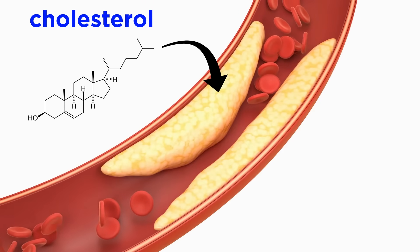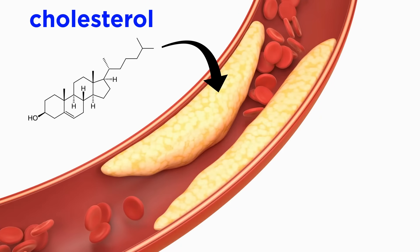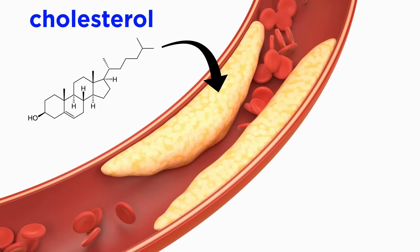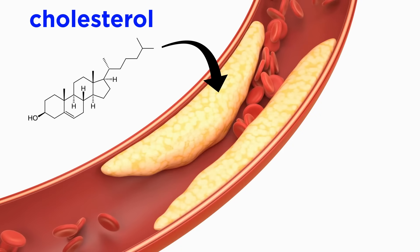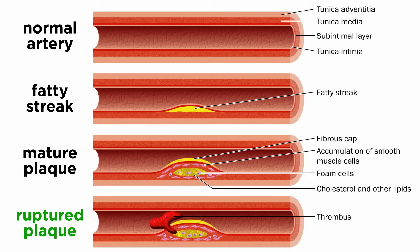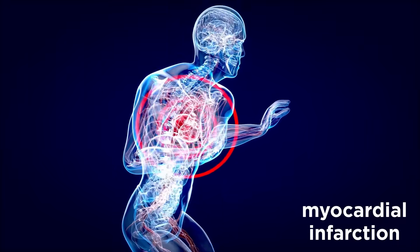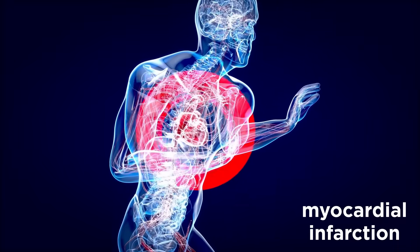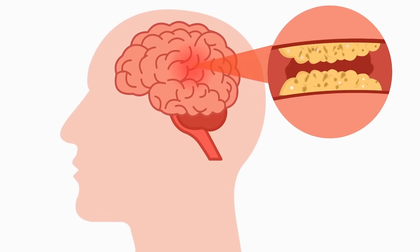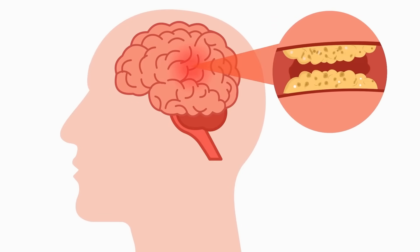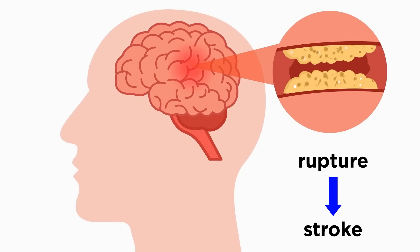In the previous tutorial, we briefly discussed the role cholesterol plays in the development of atherosclerosis and how rupture of an atherosclerotic plaque in the coronary artery leads to heart attacks, or myocardial infarction. If rupture happens in an artery supplying the brain, this leads to stroke.